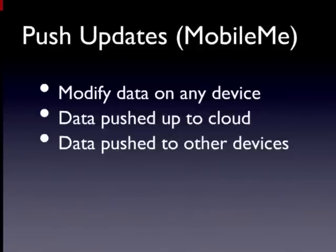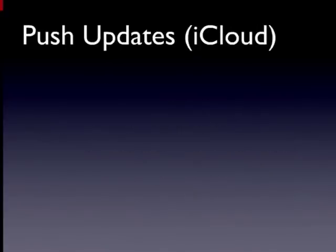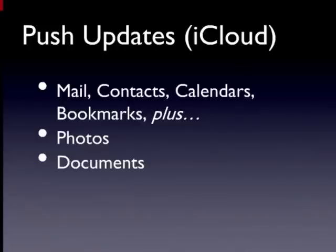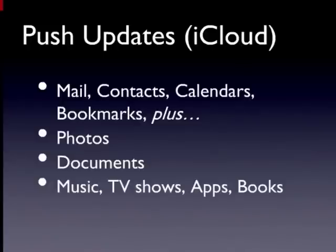In MobileMe, push updates worked for only four kinds of data: mail, contacts, calendars, and Safari bookmarks. With iCloud, Apple took those four types and added push updates for more — now you can also do push updates with photos, documents like Pages, Keynote, or Numbers, and with music, TV shows (if you're in the United States), apps, and books. Apple has made it even better and added a bunch of other kinds of data that can sync most of the time without you having to do anything.